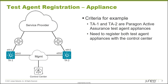In this example we have a few different devices: two test agents, TA1 and TA2, and then the control center. Those test agents are connected to a service provider network through edge routers using the eth1 interface, and using the eth0 interface they connect into the management network, which allows them to communicate with the Paragon Active Assurance control center.